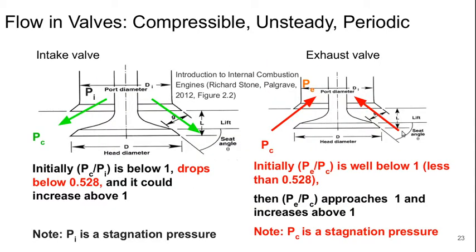Moving on, let's talk a little bit about the flow in valves. The flow in these valves is highly compressible, very unsteady, and periodic in nature. There's a port diameter and a head diameter, and as the valve moves up and down there's a perpendicular length that is revolved all the way around to create an annular area through which flow can exit an intake valve into the cylinder.